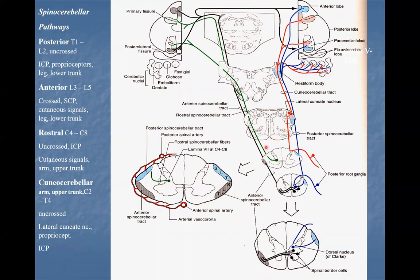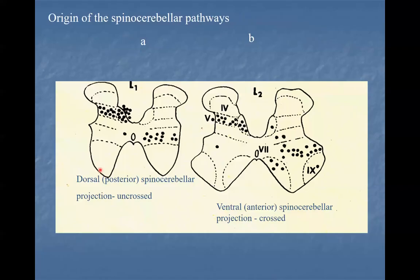There are several examples of fibers terminating in the cerebellum originating in the spinal cord: the posterior spinocerebellar tract, anterior spinocerebellar tract, rostral spinocerebellar tract, and cuneocerebellar tract. The majority of spinal cerebellar fibers originate in lamina 5, some in lamina 7, and some in lamina 8.